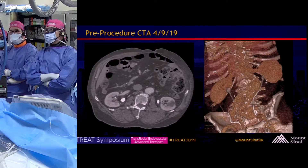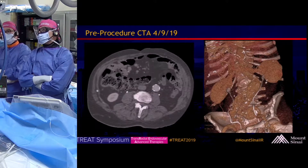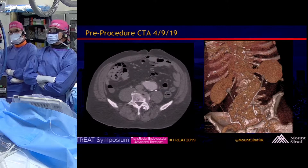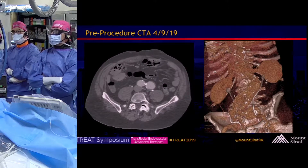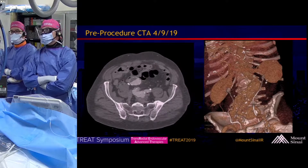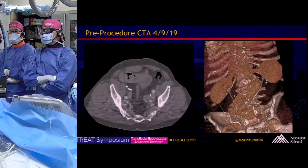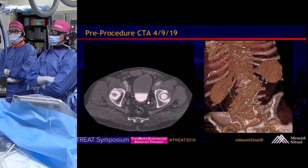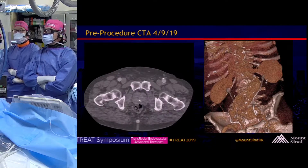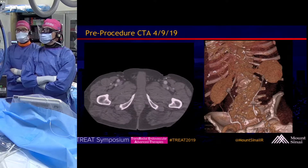On the left of the screen here, you can see an infrarenal abdominal aortic aneurysm, ectatic common iliacs bilaterally, lots of tortuosity, and a very large 4.2-centimeter left internal iliac artery aneurysm. There's a 3D reconstruction on the right as well.